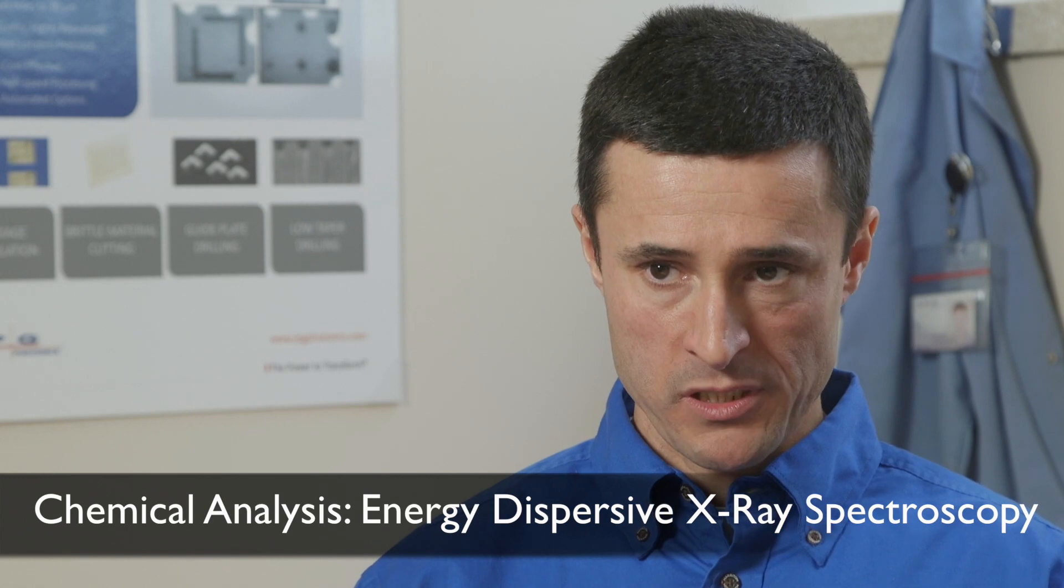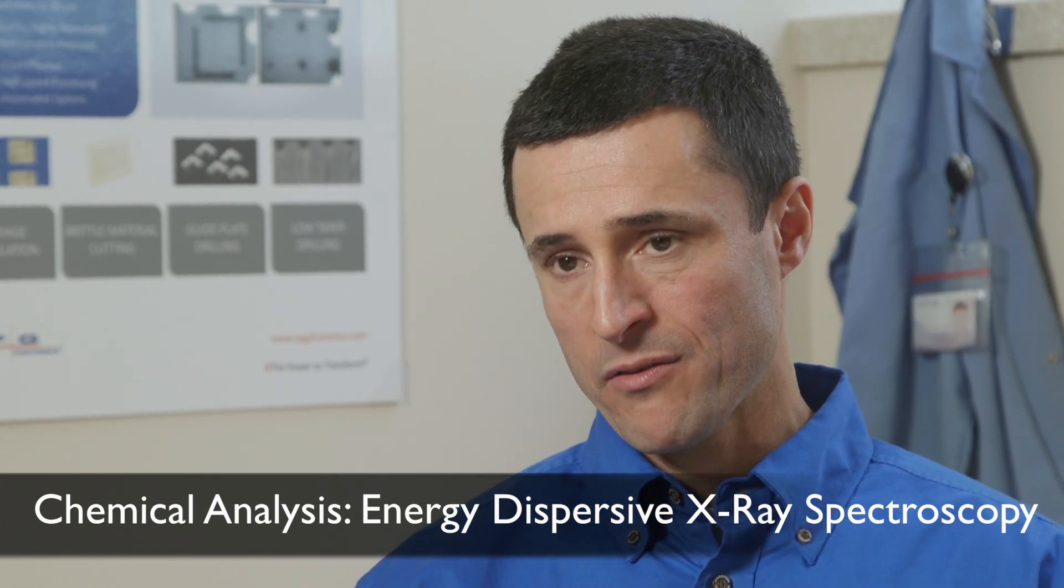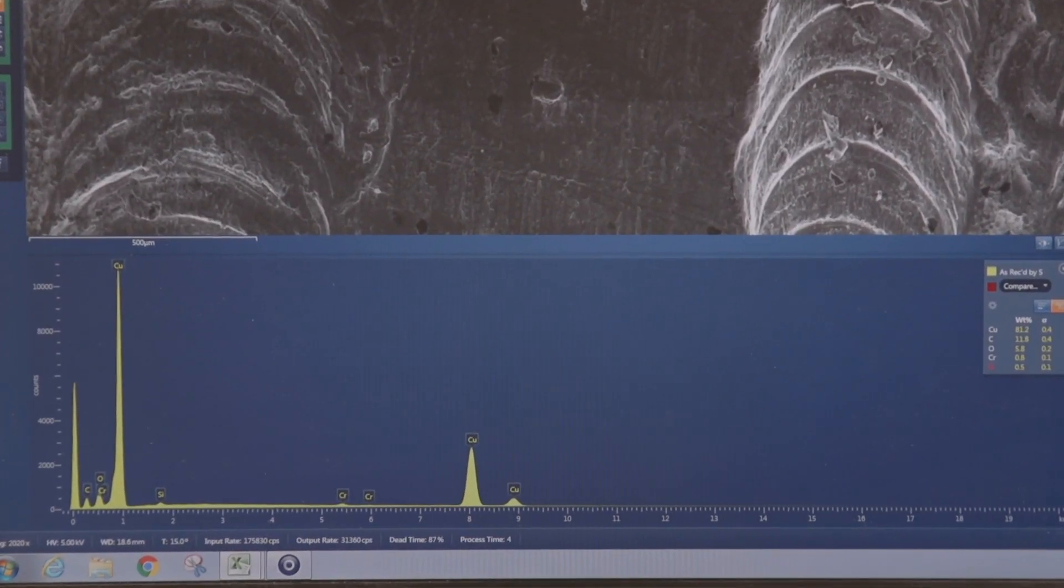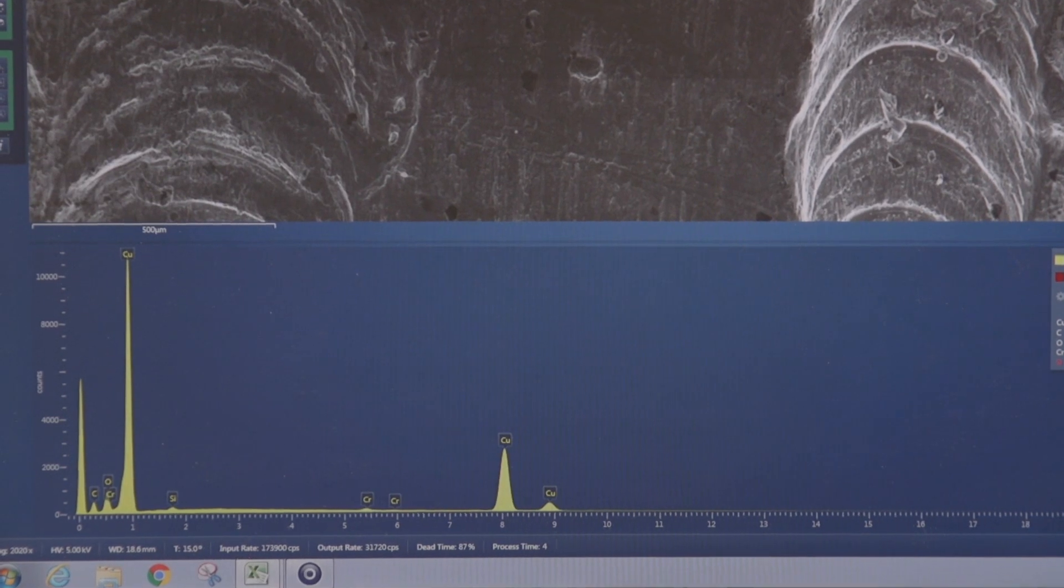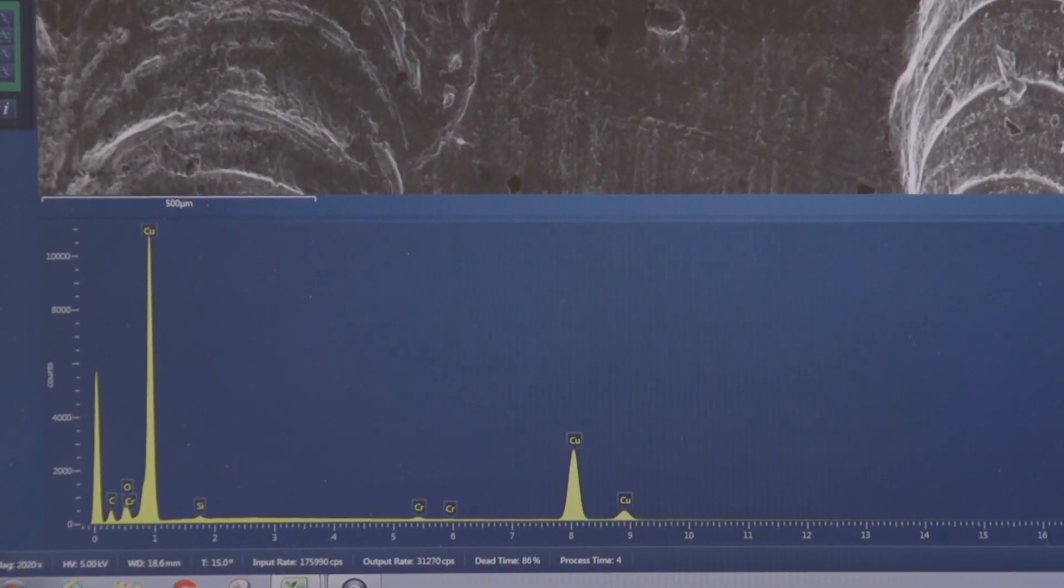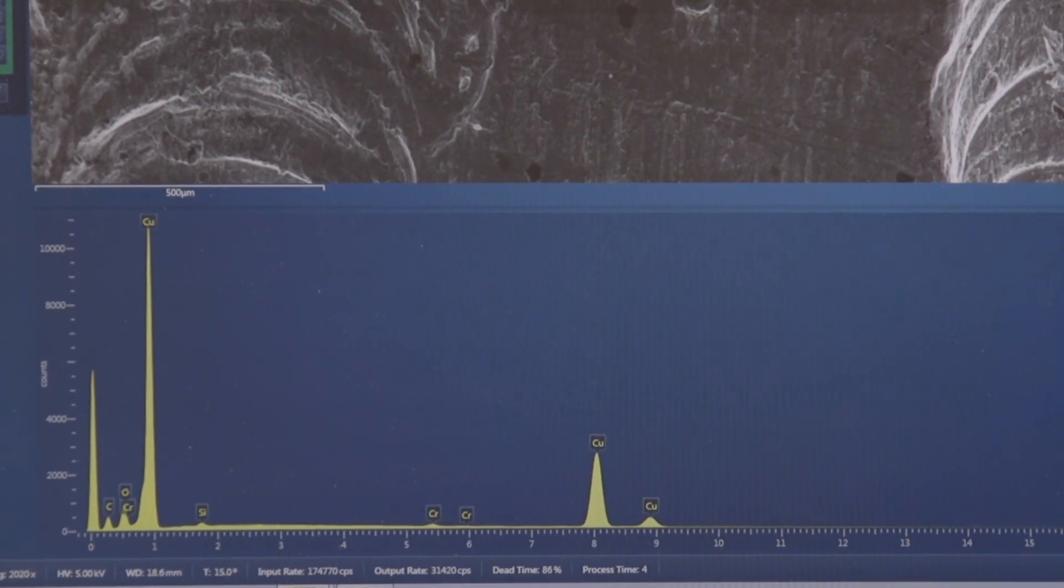Energy dispersive x-ray spectroscopy is one of the tools that we have. Here you basically focus an electron beam on the sample, typically using the SEM, and you capture the characteristic secondary x-rays that are emitted by the sample. By analyzing those, you can understand the elemental composition of the sample.